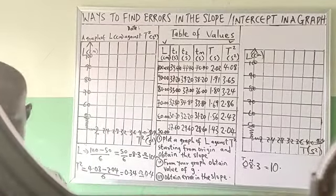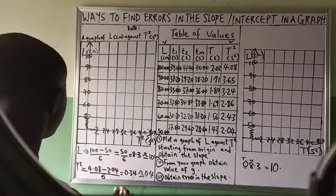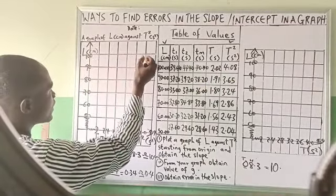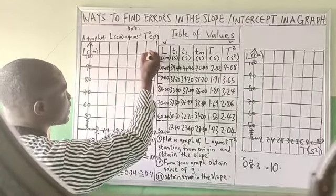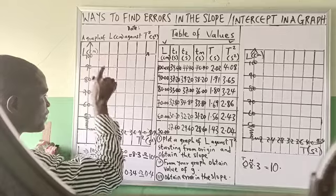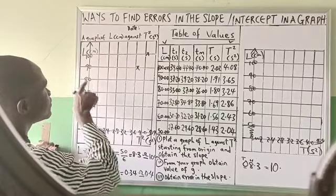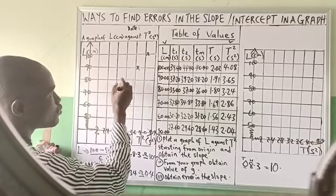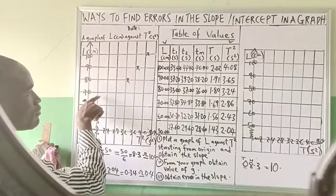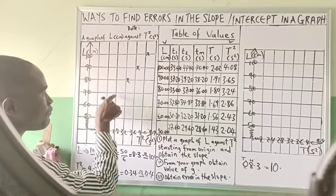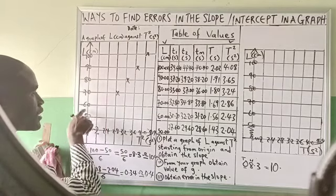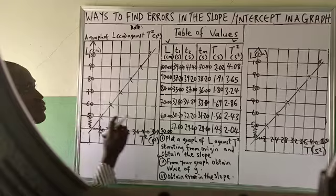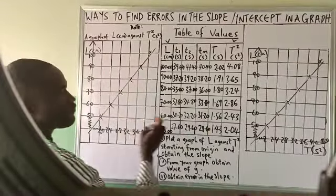Now let's locate our points. 100 against 4.0 — so 4.0 is aligned here. 90 against 3.65 — 3.65 will be around here. 80 against 3.24 — around here. 70 against 2.86 — around here. 60 against 2.86 — around here. So we have succeeded in plotting this graph. Duplicate it and put our line of best fit.